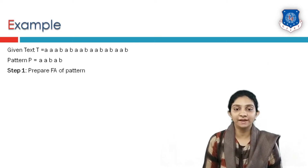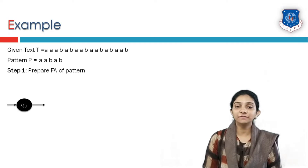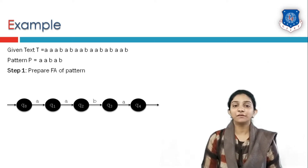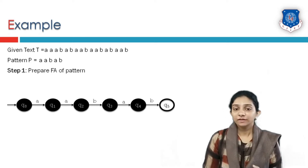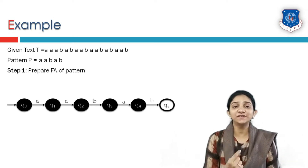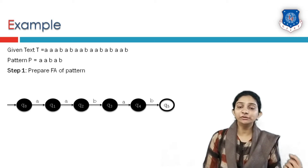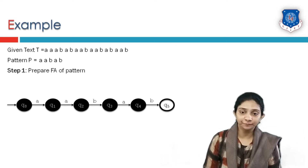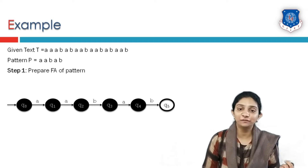Our first step is to prepare finite automata of a given pattern. Our pattern consists of 5 characters, so we are going to generate states from q0 to q5, in which q0 is the starting or initial state and q5 is our final state. From q0 to q1 the transition is the first character of the pattern, from q1 to q2 the second character, from q2 to q3 the third, from q3 to q4 the fourth, and from q4 to q5 the last character of the pattern.